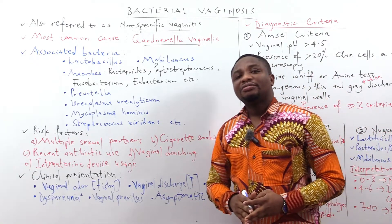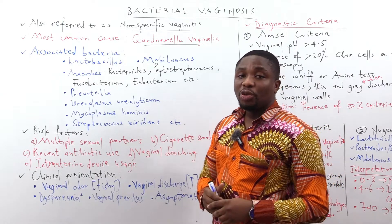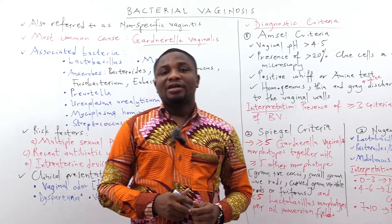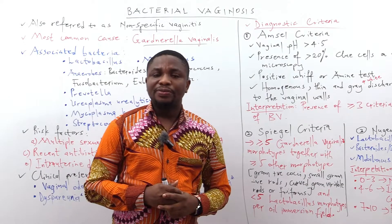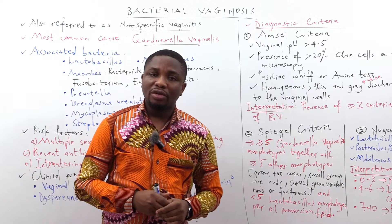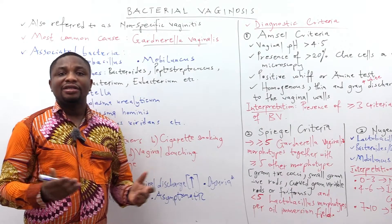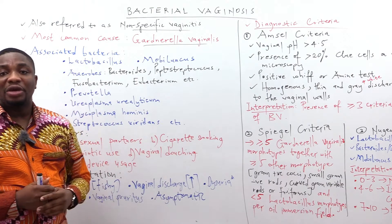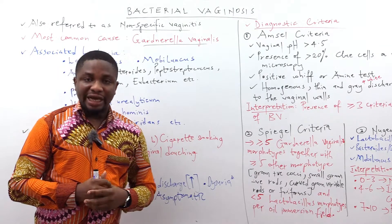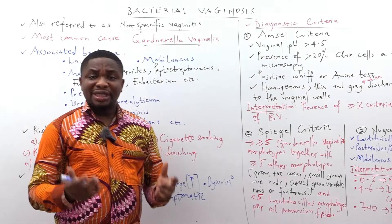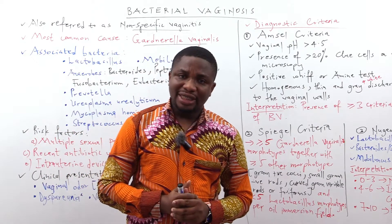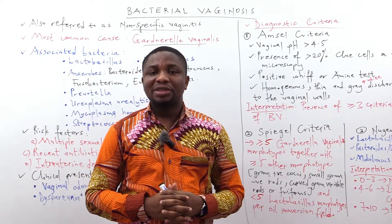Other presentations include dysuria — painful urination — though this is not so common. Dyspareunia is another presentation, also not so common. There can also be vaginal irritation, that is vaginal pruritus or itching. In some groups of patients, they present asymptomatically and do not present with any symptoms.